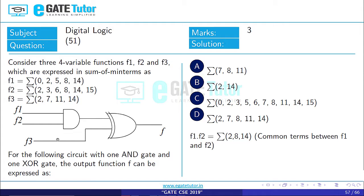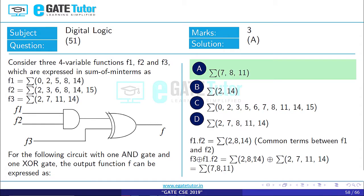Now we are doing the XOR operation with this term 2, 8, 14 to this term 2, 7, 11, 14. XOR operator is such that the terms which are present in one function but not present in another function. So here, 8 is present in this function and 8 is not present in this function. And for this function, 7 and 11 are present in this function but not present in F1 dot F2.